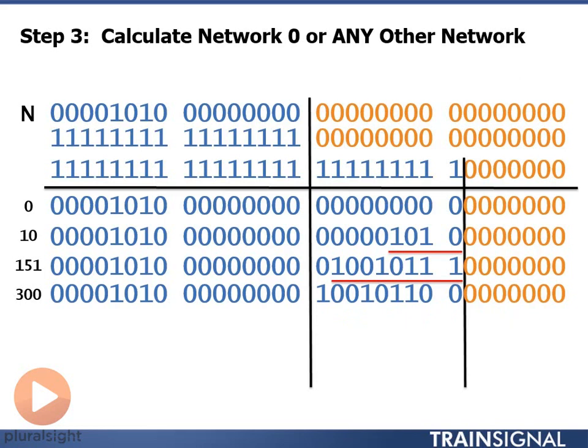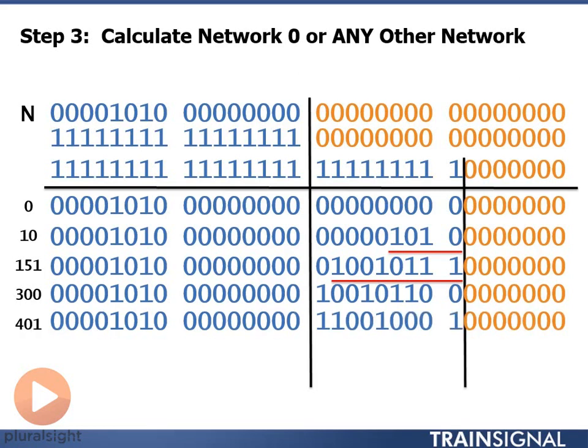The last network I want you to calculate here is network number 401. Pause the video, do your calculations, and we can restart it. Network 401 is, in binary, in 9 bits, 110010001. So we have those 9 bits which is equivalent to 401. We write that out in those 9 bits, put all zeros in the last 7 bits as that's our host portion, and we get our network address.